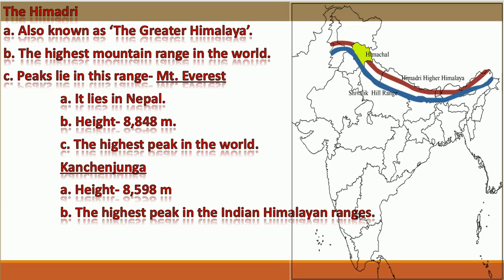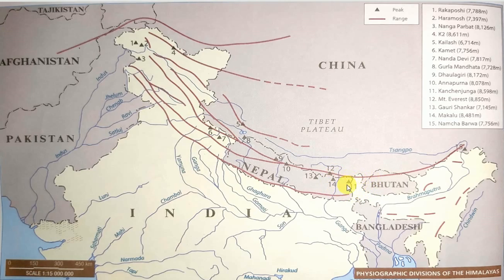The Himadri is also known as the Greater Himalaya. It is the highest mountain range in the world and most of the mountain peaks here are permanently under snow. Kanchanjunga is the highest peak in the Indian Himalayan ranges. The height of Mount Everest is 8,848 meters and the height of Kanchanjunga is 8,598 meters.